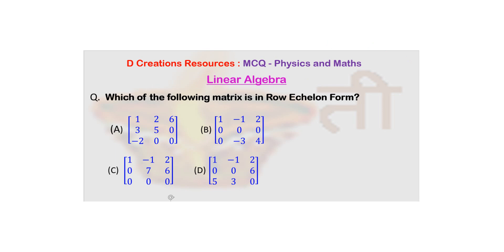Today's question is about row echelon form. So you have been shown four matrices and you need to identify which one of them is in row echelon form.